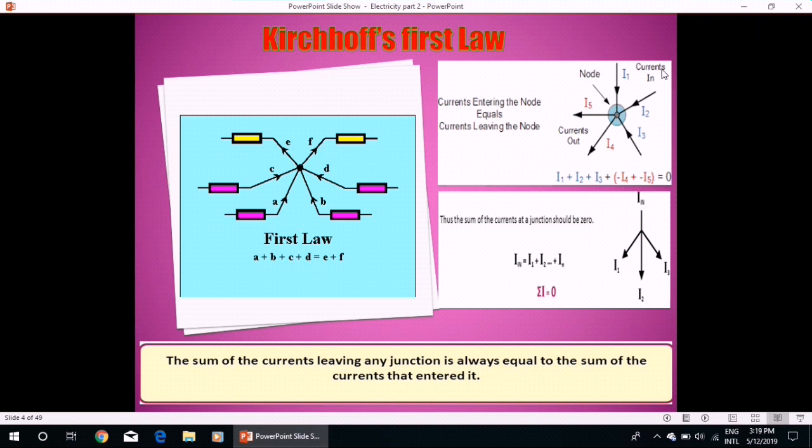Same here, I1 plus I2 plus I3, which are currents into the node entering the node, equals currents leaving the node. So, sum of all these currents must be equal to 0. Why these I4 and I5 are labeled as negative sign? Because they are leaving the node, their direction is opposite to that of the initial currents I1, I2 and I3. So, in sigma notation, in summation, we can write sigma I is equal to 0.